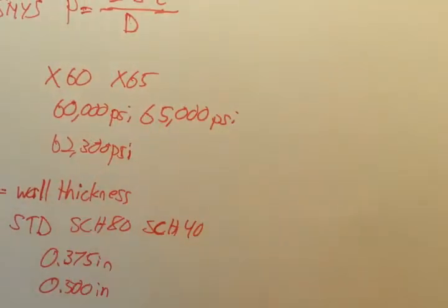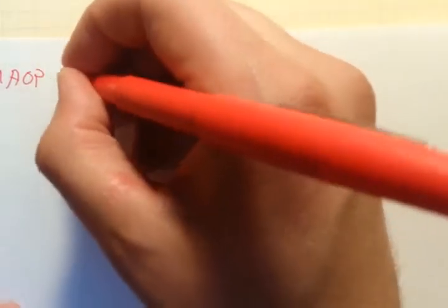So this formula gives you the yield strength pressure. To get what they call MAOP, maximum allowable operating pressure, we need three different design safety factors.